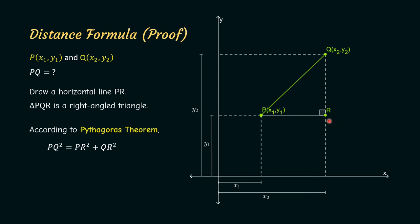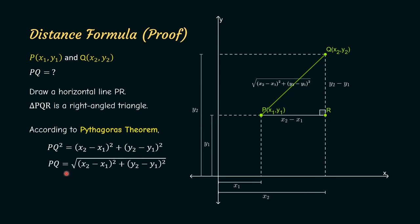Now we just need to find the lengths PR and QR. If you observe carefully, the length PR will be equal to this side over here. The length of this edge is equal to x2 minus x1. So therefore, PR is equal to x2 minus x1. Similarly, QR will be equal to this edge over here, which is equal to y2 minus y1. Therefore QR is equal to y2 minus y1. By substituting these in the Pythagoras theorem, we get PQ squared equals (x2 minus x1) squared plus (y2 minus y1) squared, which means PQ equals the square root of (x2 minus x1) squared plus (y2 minus y1) squared. This is our required formula.